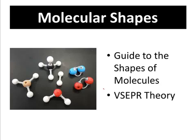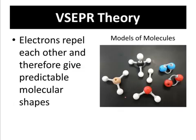Hey dudes, it's Mr. Post, and in today's video we'll be checking out molecular shapes. This is a quick guide to how to figure out the shapes of molecules. It all stems from what's known as the VSEPR theory — the valence shell electron pair repulsion theory. That means your outer shell electrons repel each other, and therefore they give what we call predictable molecular shapes.